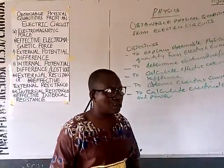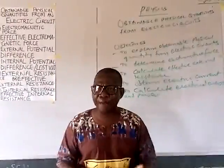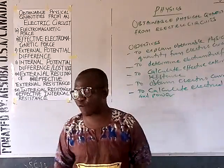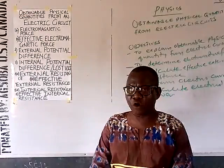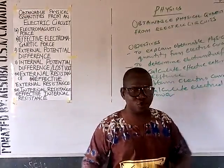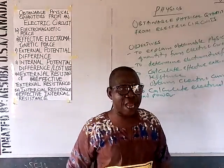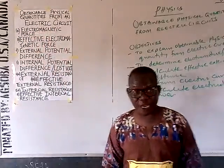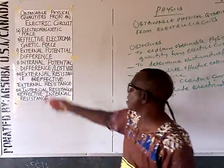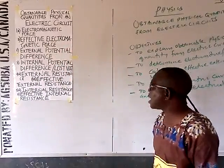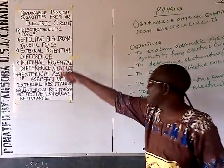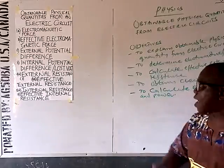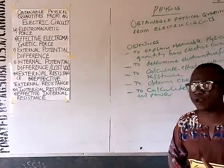The obtainable quantities from the electric circuit are: electromotive force (if there is just one cell); effective electromotive force (when we have two or more cells combined); external potential difference; internal potential difference; external resistance or effective external resistance; and internal resistance or effective internal resistance.